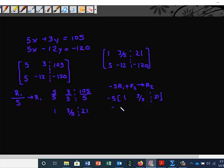This is going to be -5, -3, and -105. We're going to add it to row two, which is 5, -12, -120. So here we get 0, -15, and -225. That's our new row two.